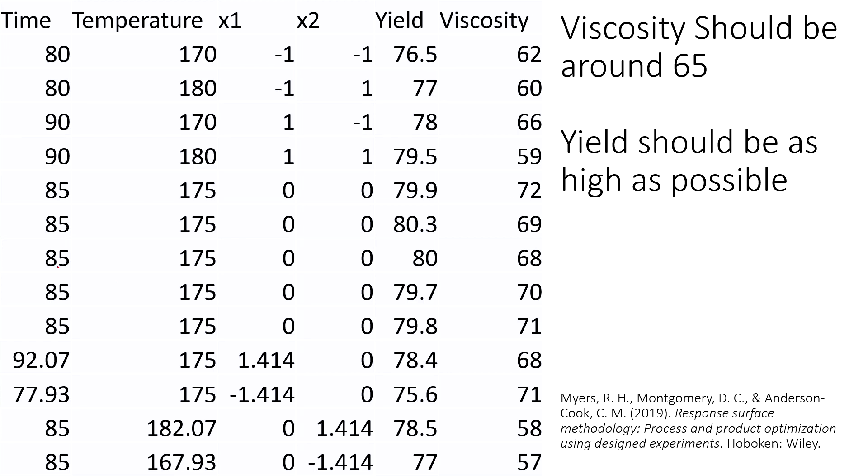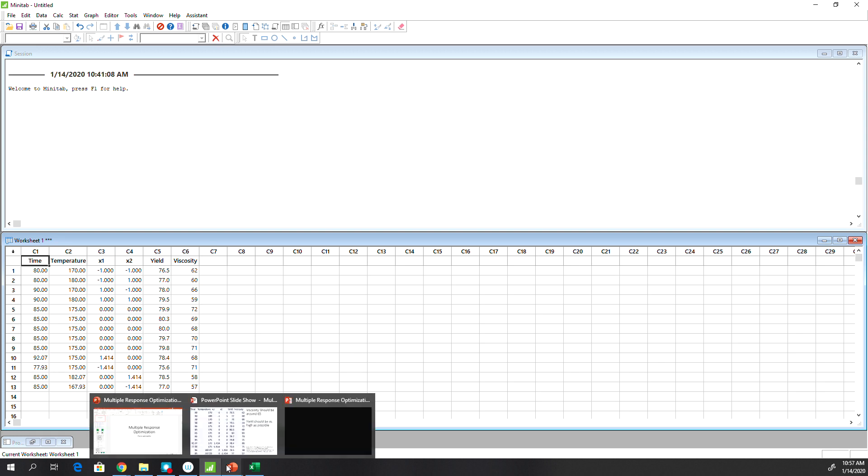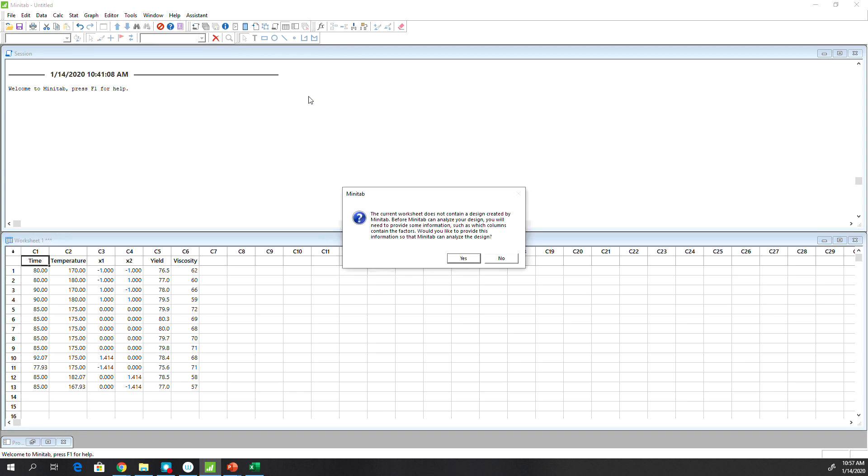So let's copy this data. I have copied this data in Minitab and analyzed it. And then after I analyze it, I'll explain the entire process in this video how to do it. So go to stat DOE response surface, design response surface.